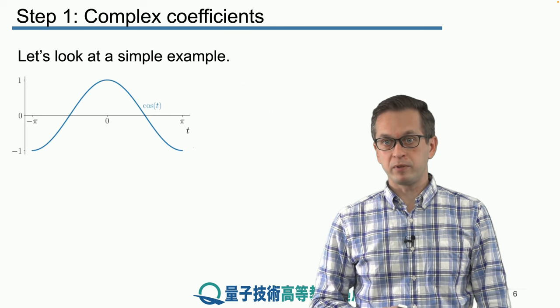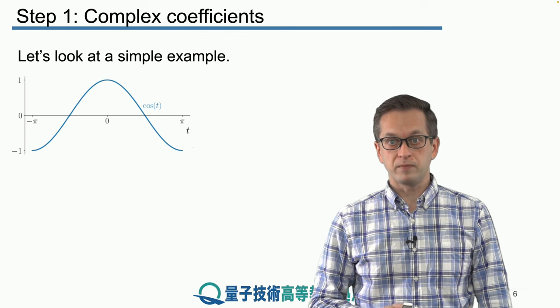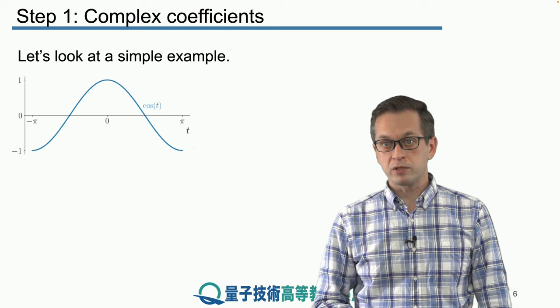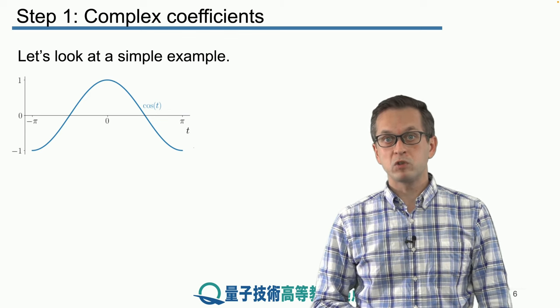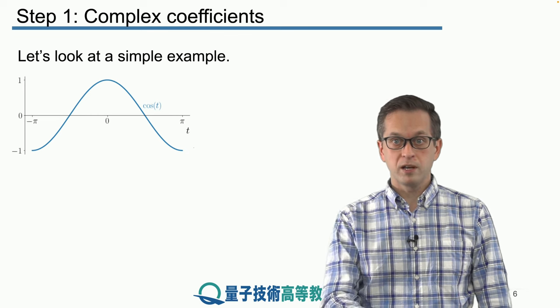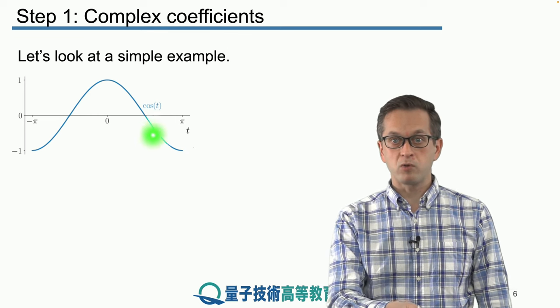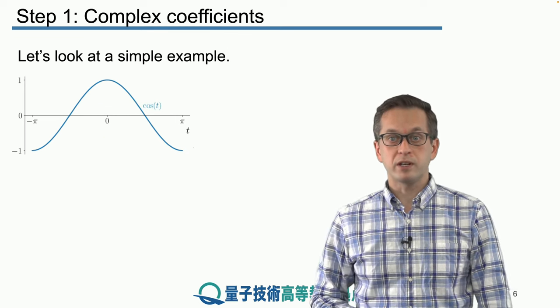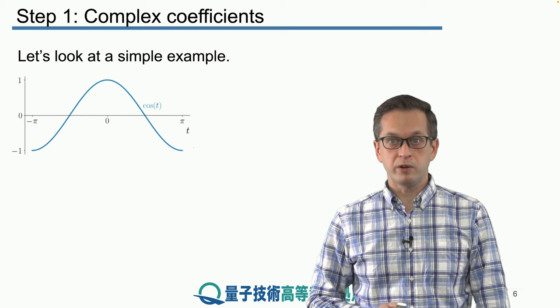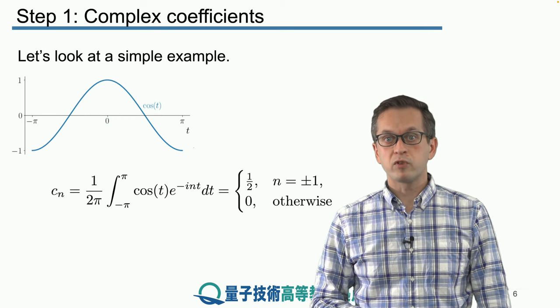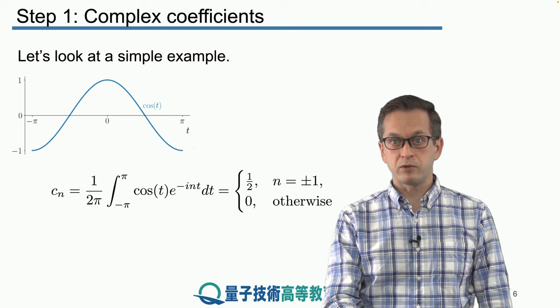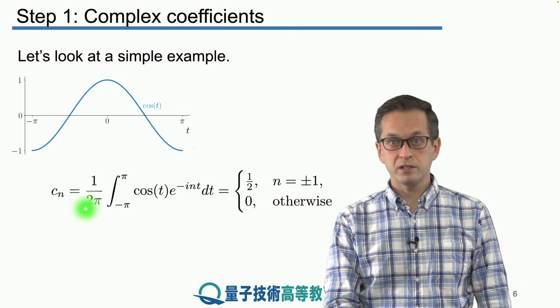So let's start with a very simple example of a cosine function. In this example, we're considering the fundamental frequency to be 1, so omega 0 is 1. Therefore, the function is just given by cosine of t. So we can see that it's a 2π periodic function.